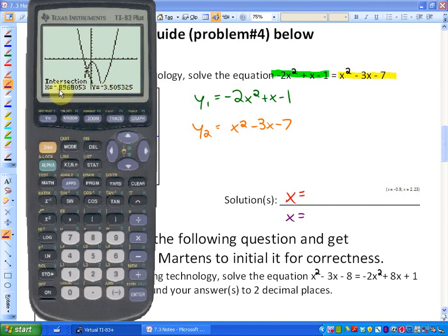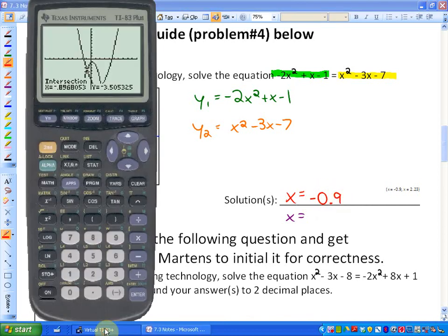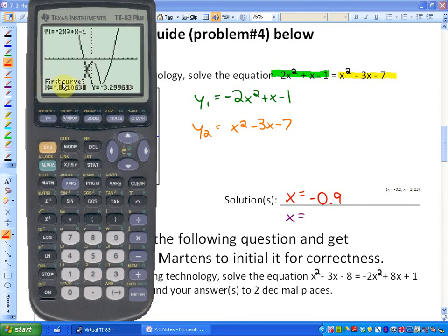So the value of x would be -0.8968053, or I'll just make it -0.9. And let's do the second intersect, so press 2nd and then TRACE and then go down to intersect. And again, this is not asking left bound or right boundary, it's just asking for a guess.